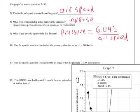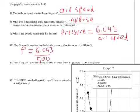Now we're going to use this specific equation to find the pressure when airspeed is 500 km/h. That means we substitute 500 for airspeed: P equals 6.043 divided by 500. When I divide that, I get P equals 0.012 atmospheres. I know it's atmospheres because if I look at the y-axis which measures pressure, I can see that pressure is measured in atmospheres.